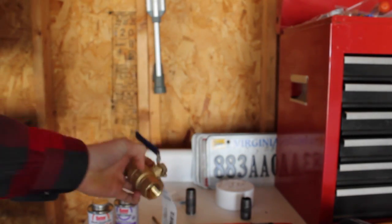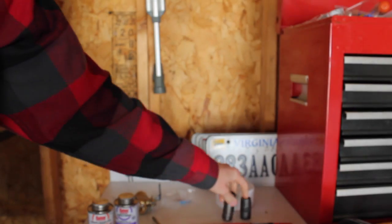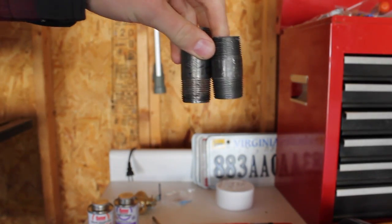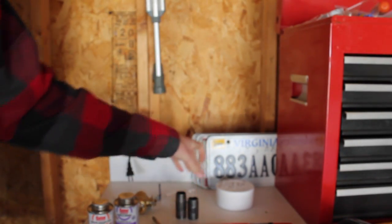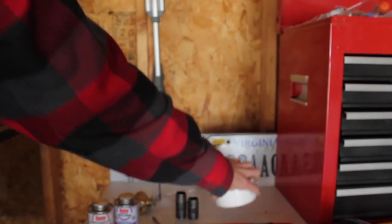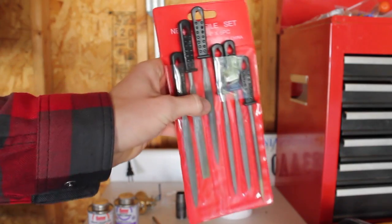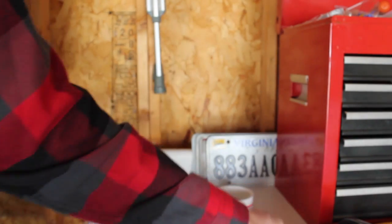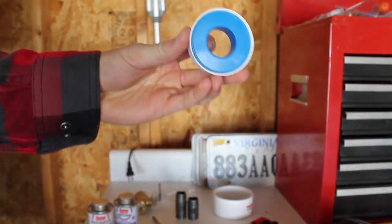You'll also need a 3 quarter inch ball valve, two 3 quarter inch iron or steel nipples, a 3 inch diameter end cap (you will need 2), a set of files, and Teflon tape.